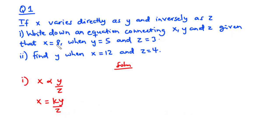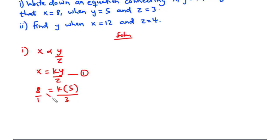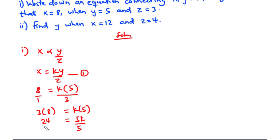Next, we substitute the values of x, y and z into this equation to find k. So we have 8 equals k times 5 divided by 3. Cross multiplying gives 3 times 8 equals k times 5, so 24 equals 5k. Dividing both sides by 5, we get k equal to 4.8.